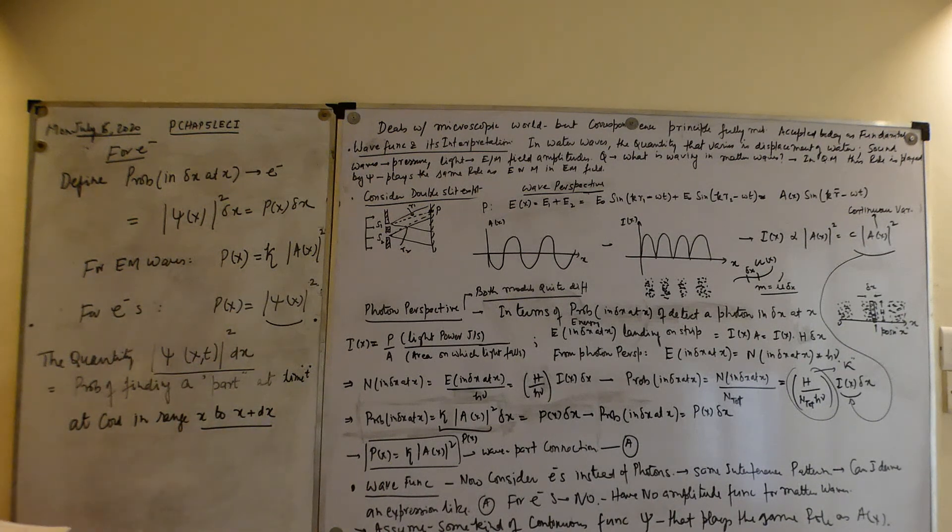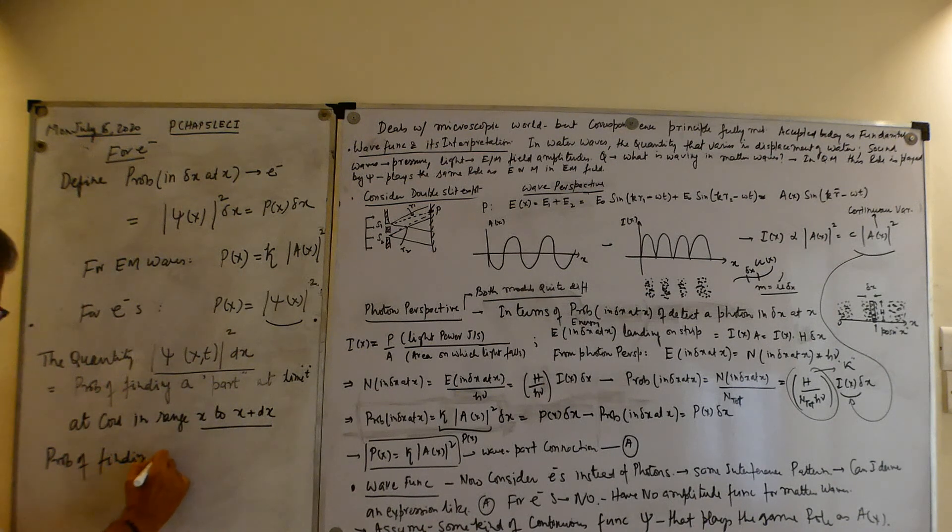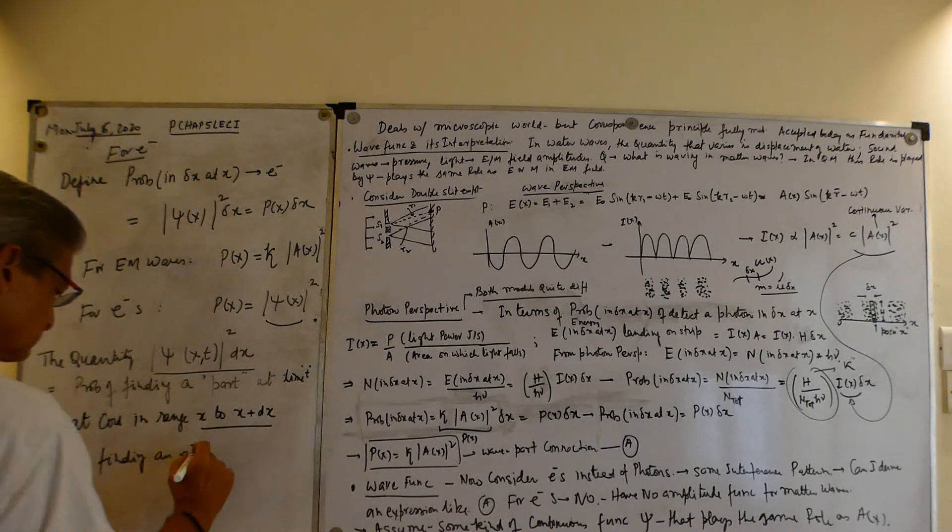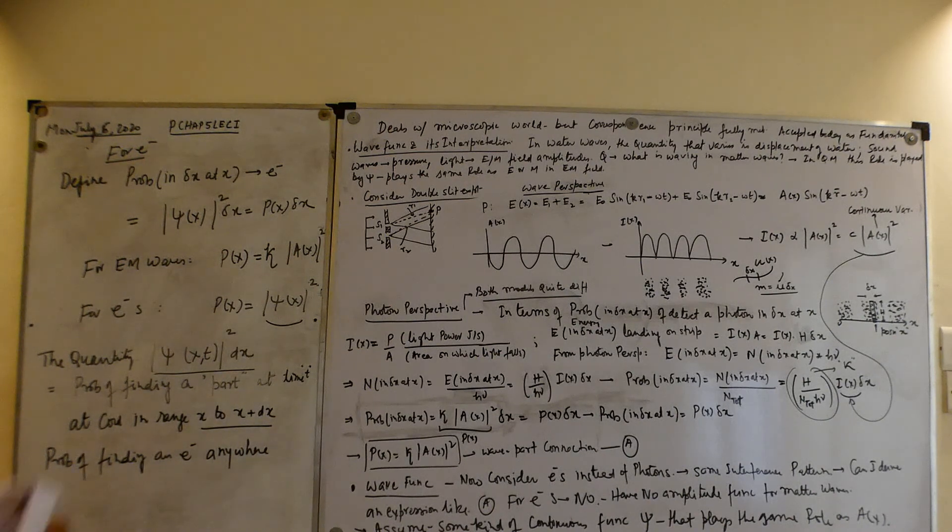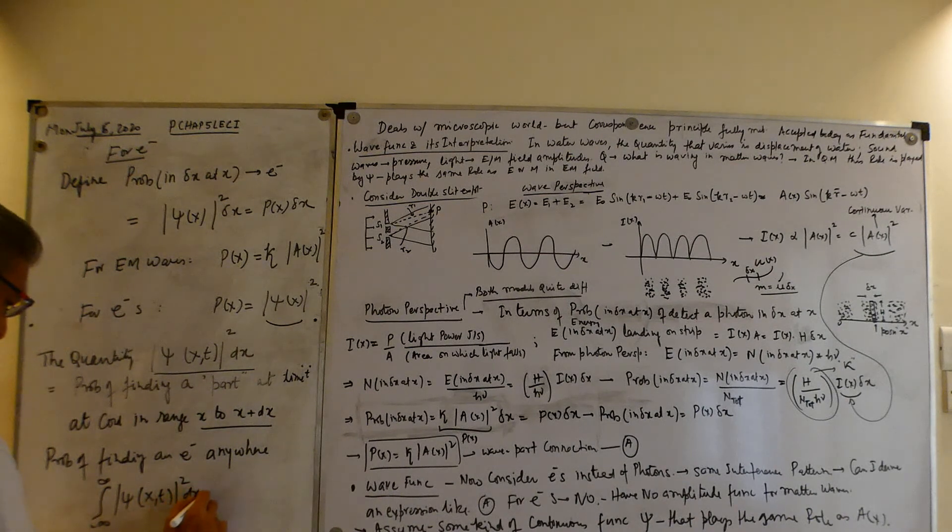Now, the probability of finding an electron anywhere from minus infinity to plus infinity, it should be 1. We should be able to find the electron somewhere, right? So we say that from minus infinity to plus infinity, psi as a function of x squared dx must be equal to 1. And this is called normalization condition.